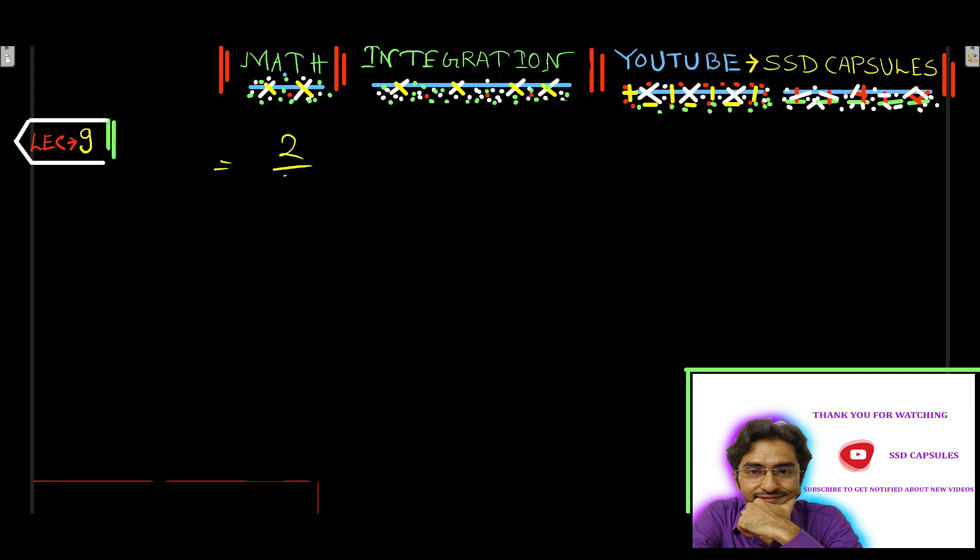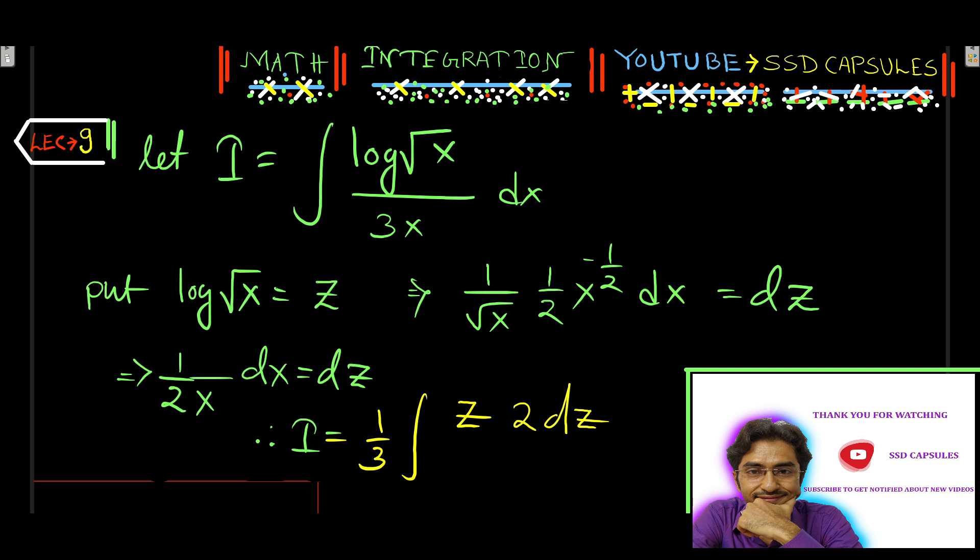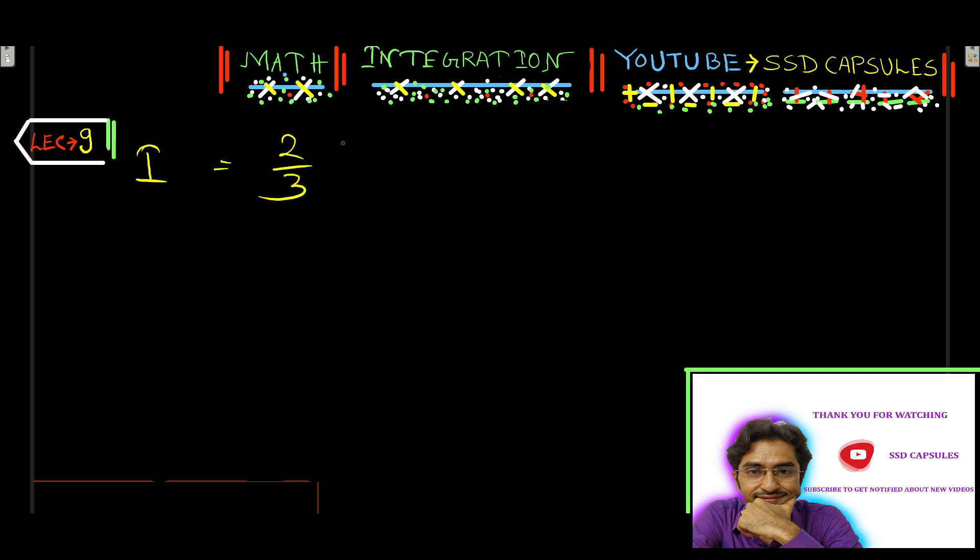Therefore, I equal to 2 by 3 integration z dz, which equals 2 by 3, z squared over 2, plus c.